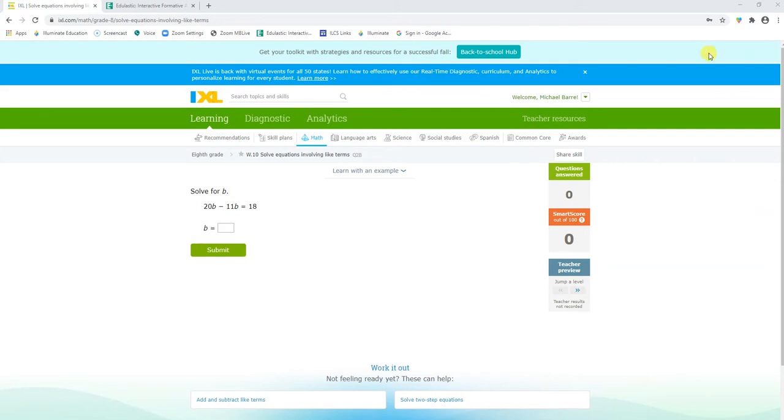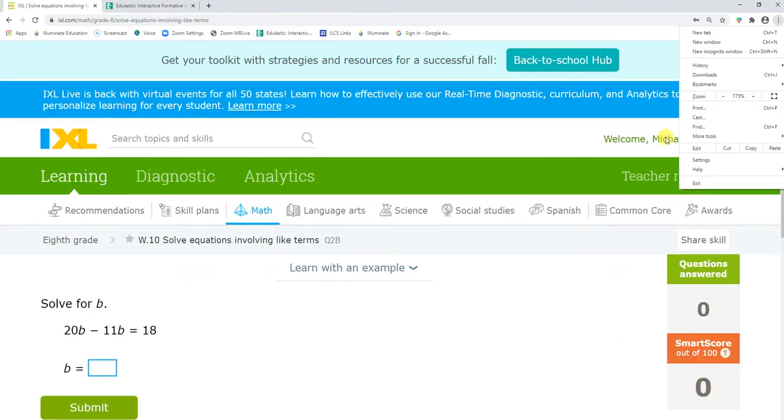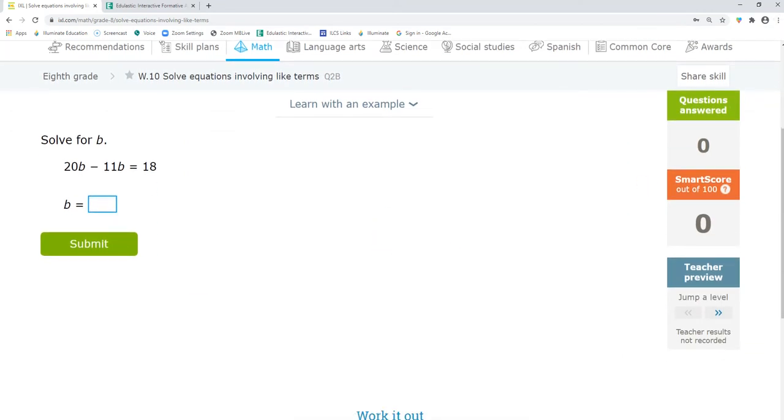So what I'm going to do first, let me zoom in a little bit for you guys. I'm going to combine the terms on this. So I have 20 bats minus 11 bats. That's going to give me 9 bats. So I have 9 bats equals 18. Dividing both sides by 9, that gives me bats equals 2. So I'm going to put 2 right there and see if I get it right.